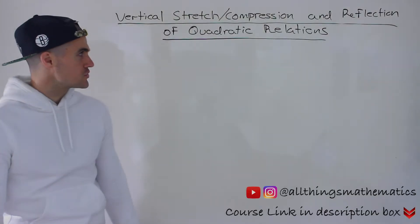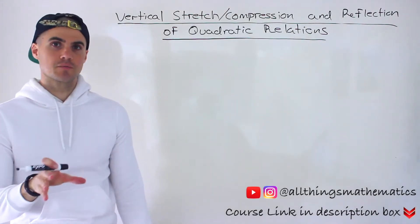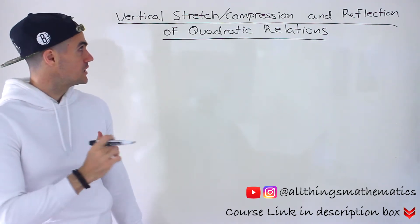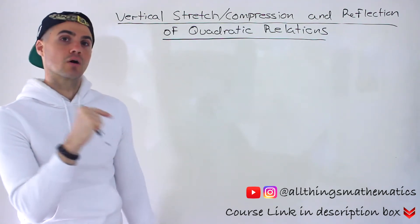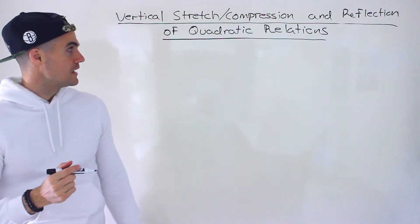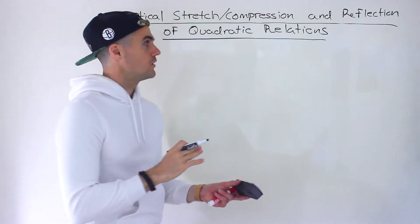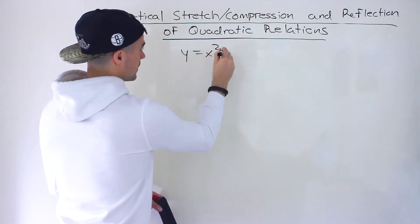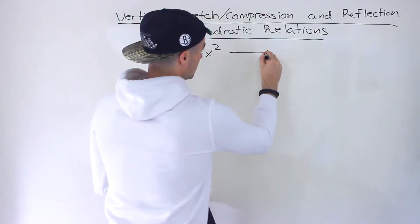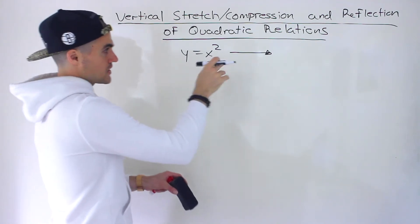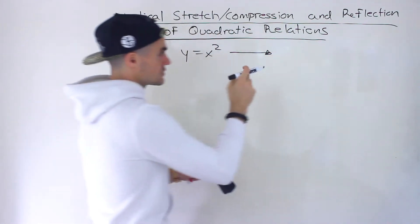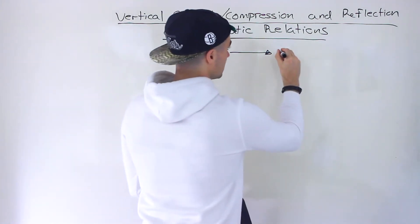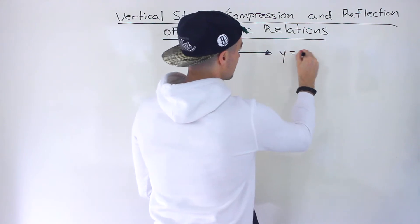Welcome back everyone, Patrick here. Moving on to the next video, still dealing with transformations of quadratics. In this particular video, we're going to look at the specific transformation that's a vertical stretch and compression, and also a reflection in the x-axis. In the previous overview video, I mentioned that we're going to have a base function y equals x squared and then we're going to transform it. The format we're going to be looking at in this section is vertex form.